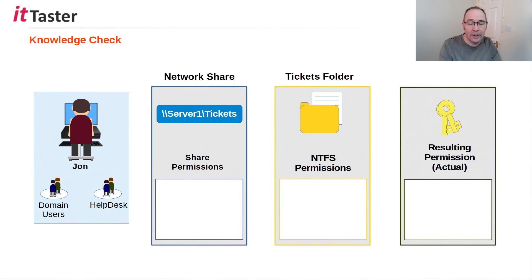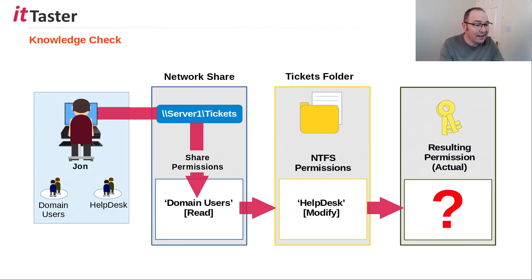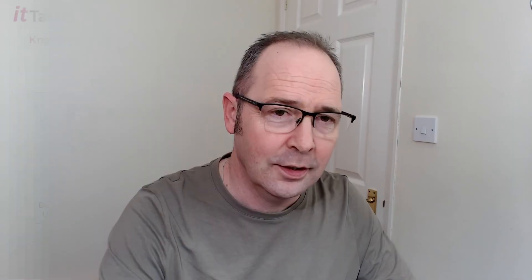Let's look at one more scenario. We have a user John, who is a member of the Domain Users group and also a member of the Help Desk group. John connects to the Tickets share. The share permissions are configured as Domain Users group: Read. The NTFS permissions are configured as Help Desk group: Modify. The question is: what is the resulting permission that John has to access the Tickets folder? Have a think about it, pause the video if you need to, and leave the answer below in the comments. Knowing how to share folders in Windows Server 2022 is a really important skill. I hope you enjoyed the video — please give it a like and share it, and check out this video next if you want to learn more.